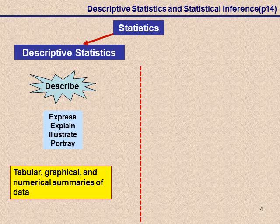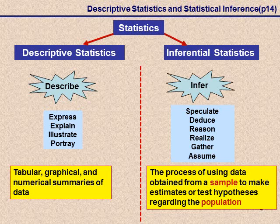The second important step is inferential statistics. There we are using the data that we have now summarized to make assumptions about data we haven't actually observed. That's where our sample comes in. We can do descriptive statistics on the population as well, because we can obviously draw a table, graph, or numerical summary of population data too. Inferential statistics, however, always makes use of what we've observed in the sample to make some estimate or assumption about what's happening in the population.